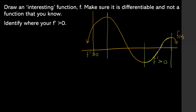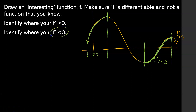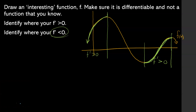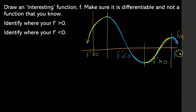f prime is also greater than zero because f is increasing there too. So where does our graph have a slope that's less than zero? f prime is going to be less than zero when f is decreasing. So that's going to be in this region and over here on the right. Here f prime is less than zero, and over here f prime is also going to be less than zero — f prime is negative, f is decreasing.